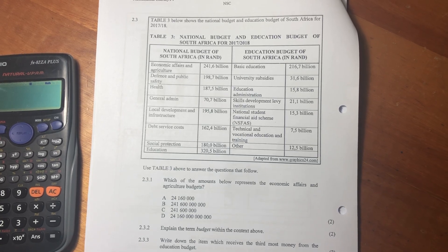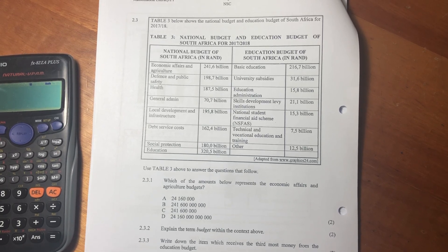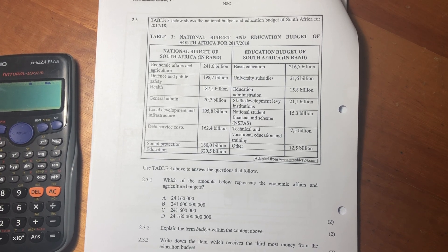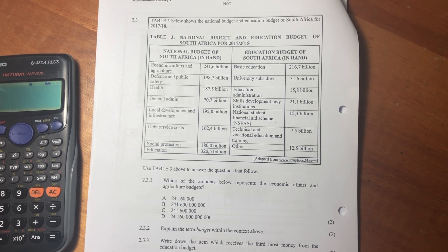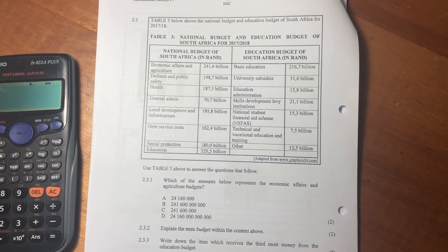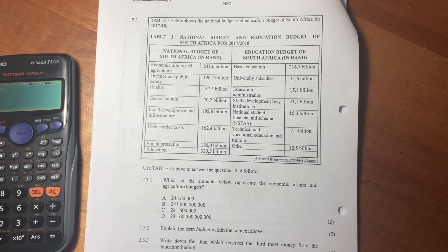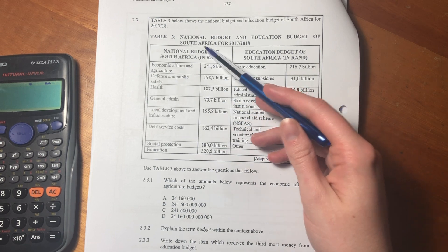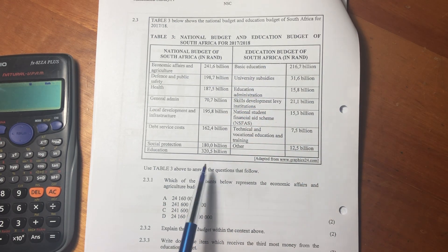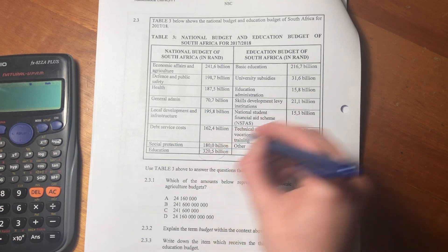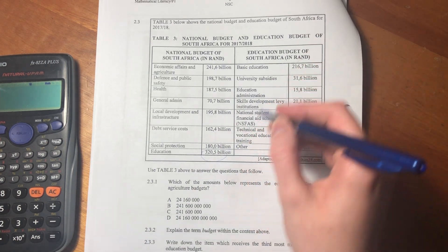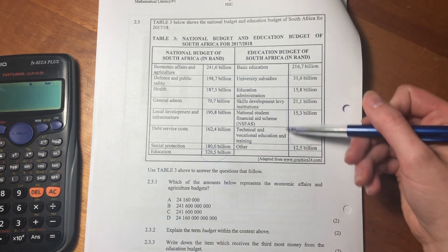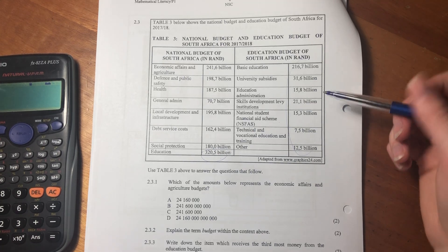Okay, let's do 2.3, which is the last question of question two. So it says table three below shows the national budget and education budget of South Africa for 2017/18. So basically what we're seeing here is the various allocations in different subsectors within the national budget. And you see education here - this education would be the sum of all these educations, but it's just showing you how this 320.5 billion is split amongst different educational sectors or priorities.